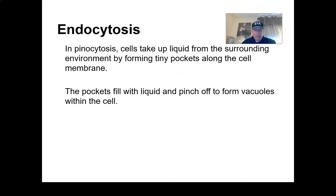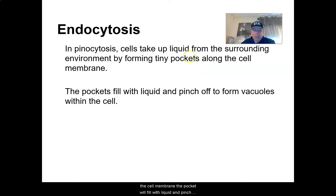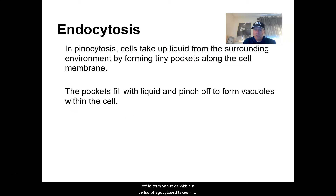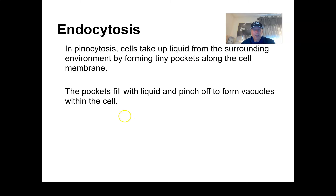In pinocytosis, cells take up liquids from the surrounding environment by forming tiny pockets along the cell membrane. The pocket fills with liquid and pinches off to form vacuoles within the cell. So phagocytosis takes solid, enlarged things into the cell, while pinocytosis takes up liquid into the cell.